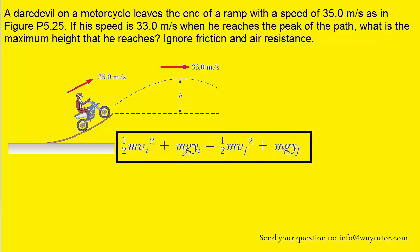We'll notice on the left side of the equation we have subscripts of i, which indicate initial values, and on the right side we have subscripts of f, which indicate final values. The terms that have ½mv² represent kinetic energy, and the terms that contain mgy represent the gravitational potential energy.